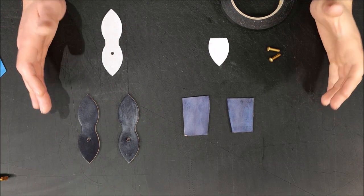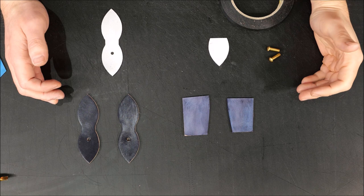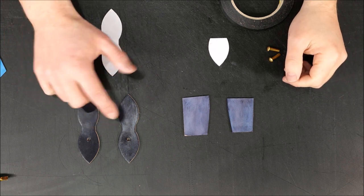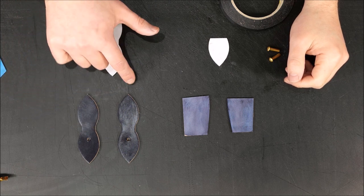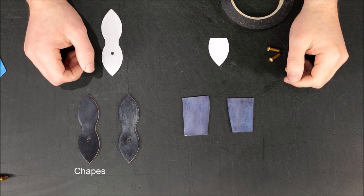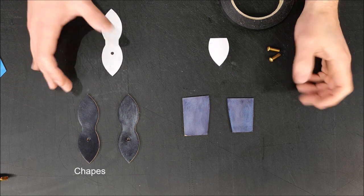So for the last piece of the puzzle before we start assembly of the bag, we want to shift our focus to the handle attachments. So these are known as the chaps, which is going to be the interface between the handle and the bag.